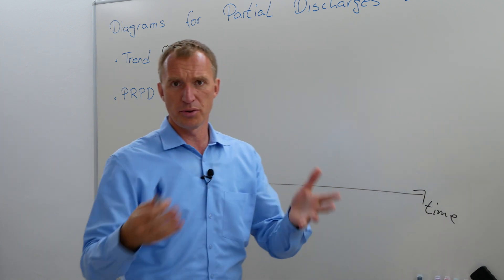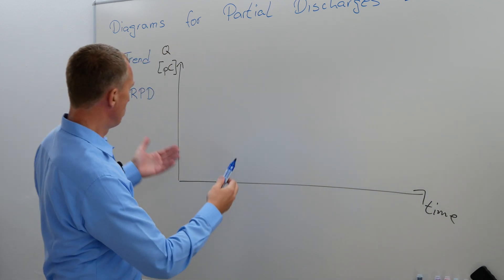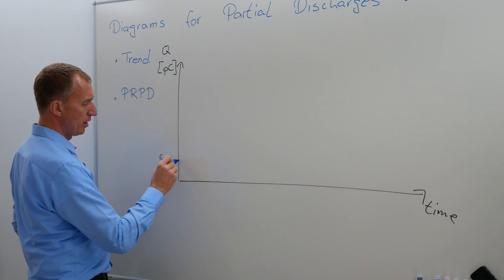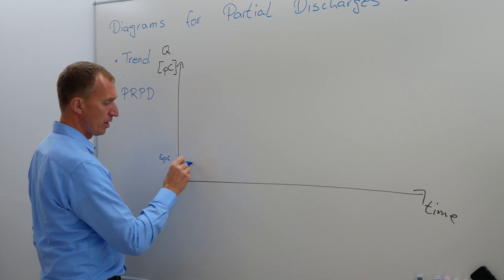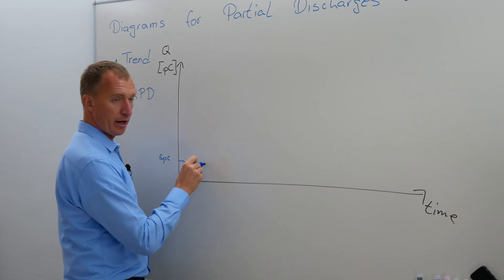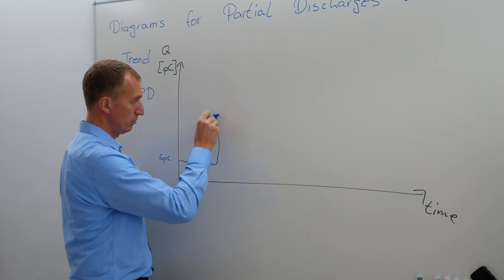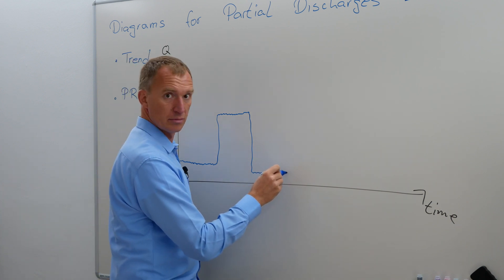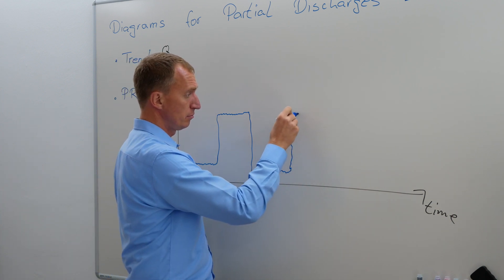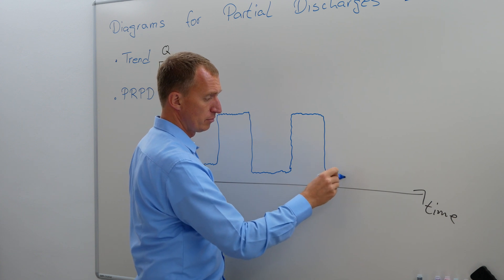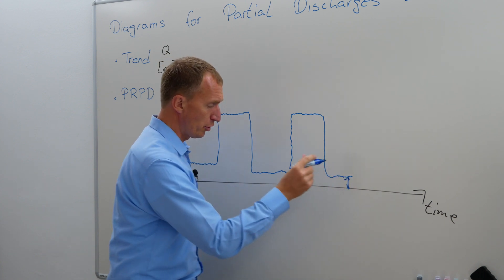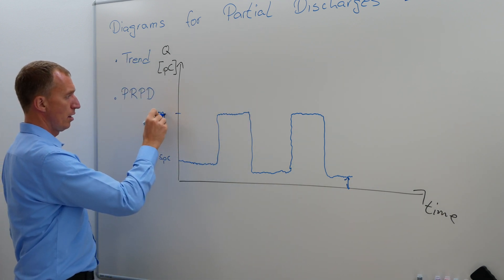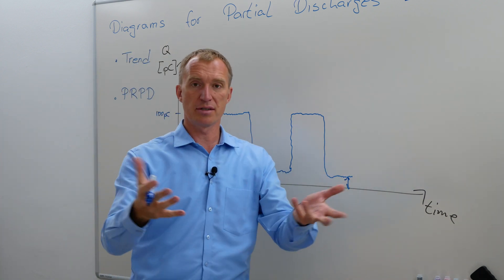Now let's imagine I'm putting a trend over time. Let's say I have noise at around 5 picocoulombs, and now somebody turns on my high voltage source and I'm getting partial discharges, and now somebody turns it off. Now we turn it on again and we turn it off again. So constantly we would see our noise floor here, and this would be our partial discharges at around 100 picocoulombs. This is a trend.